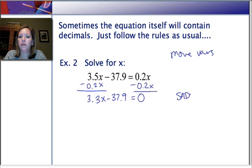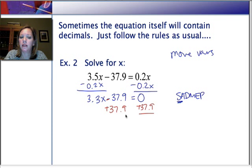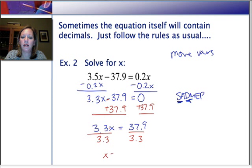So now I've moved my variable. I'm going to undo the rest of the operations using SADMEP. So first I'll undo that subtraction that I see. I'll undo the subtraction by adding 37.9 to both sides. And that's going to leave me with 3.3x = 37.9. Now I can undo the multiplication that I see. 3.3 times x. So we'll divide both sides by 3.3.